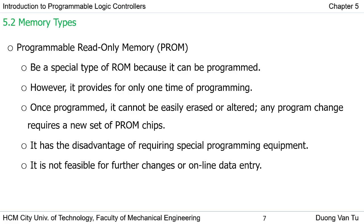The next type is Programmable Read-Only Memory, PROM. This is an improved version of ROM because it can be programmed, but only one time. Once programmed, this type of memory cannot easily be erased or altered. Any program change requires a new set of PROM chips. It has the disadvantage of requiring special programming equipment and is not feasible for further online changes.